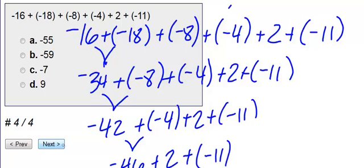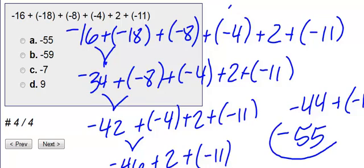Okay, then we have negative 46 and positive 2. So we get negative 44. And lastly, I need to add negative 11. So negative 44 and negative 11 is negative 55. Therefore, our answer in this case would be answer choice A.